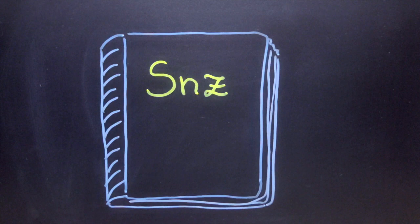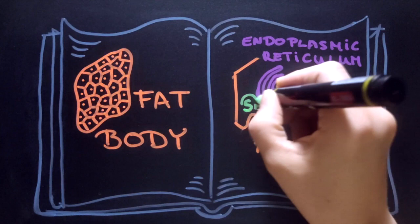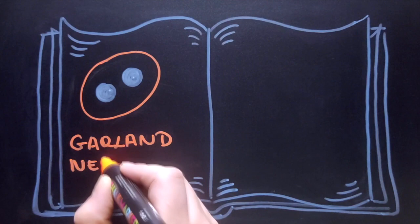In the lipid-storing fat body, Snazarus mediates lipid transfer between the plasma membrane, lipid droplets and the endoplasmic reticulum as a part of membrane contact sites.